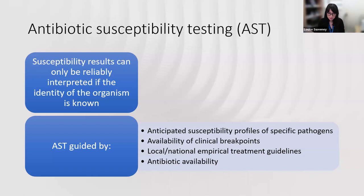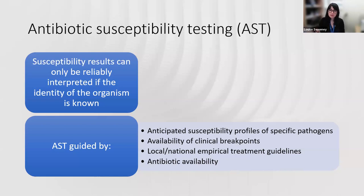AST, as we often refer to it, is guided by a number of important points: the anticipated susceptibility profiles of specific pathogens — are they intrinsically resistant to certain antibiotics? — the availability of clinical breakpoints, local and national empirical treatment guidelines, and antibiotic availability. There are different ways of testing antimicrobial susceptibility. The gold standard is microbroth dilution, which gives us the minimum inhibitory concentration (MIC) — the lowest concentration of an antimicrobial agent that inhibits the visible in vitro growth of a microbe.